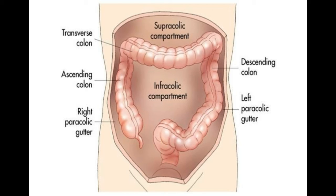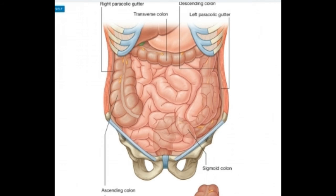Paracolic gutters function to drain fluid that leaks from the colon, such as infectious matter, pus, or bile, and to prevent infection or damage to the outer margin of the colon. This drainage occurs in much the same way that the gutters on a house draw the rain off the roof.